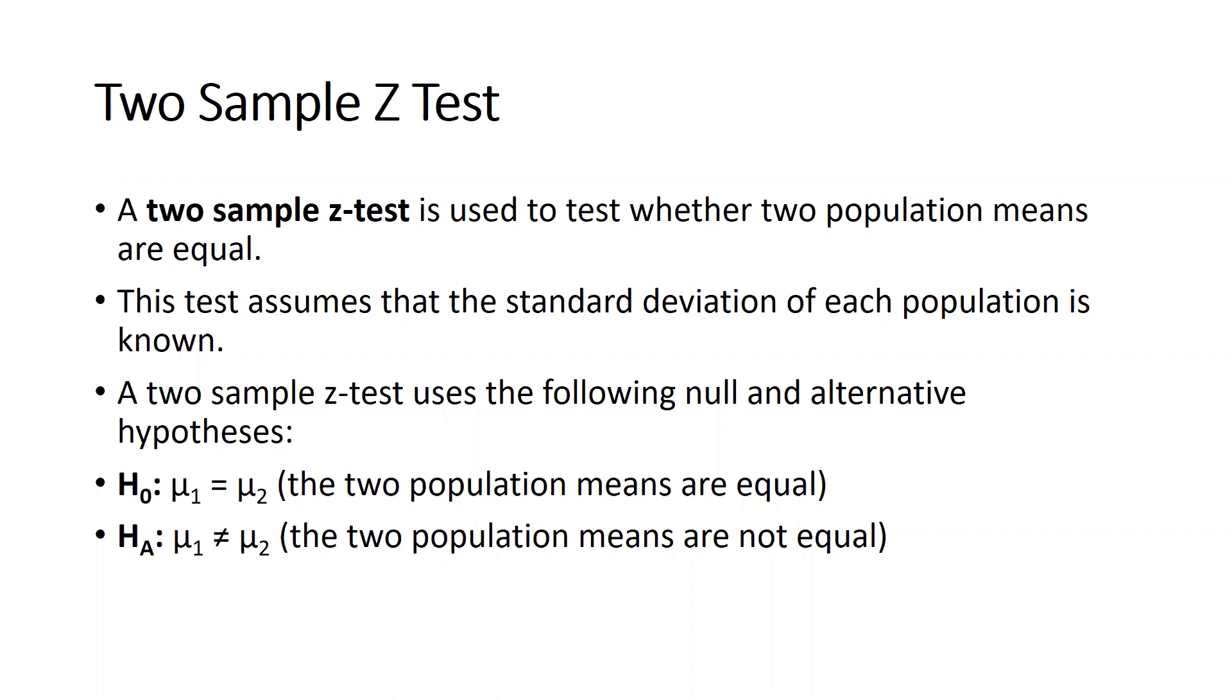This test assumes that the standard deviation of each population is known. Our two sample z-test uses the following null and alternate hypothesis. Null hypothesis: the two population means are equal, and alternate hypothesis: the two population means are not equal.